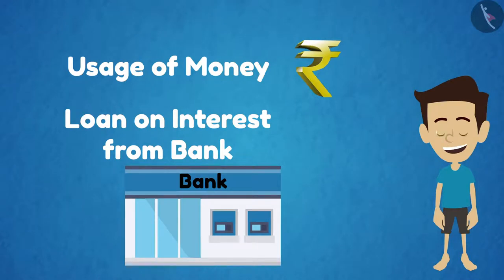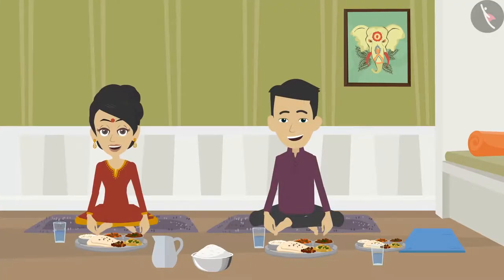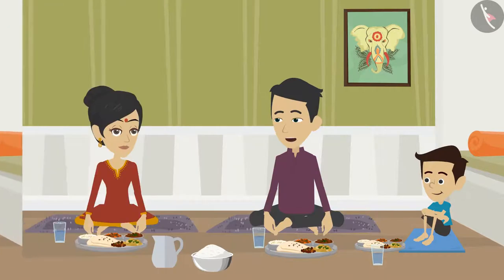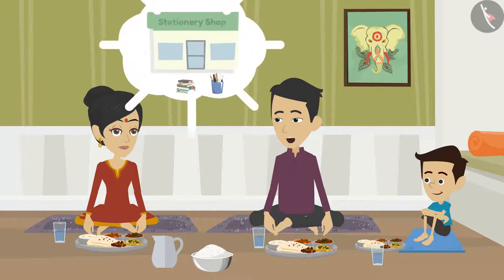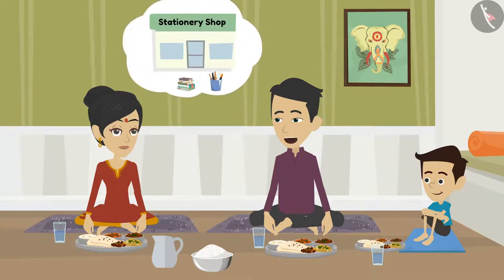Ramu, Sunita, and Shyam are having dinner together. Sunita says: I was thinking to open a stationary shop, but I have only rupees 10,000. How can I arrange the rest of the money? We can make use of the money that we started saving — 2,000 every month, almost 15 months back. How much do you think we have saved in total?